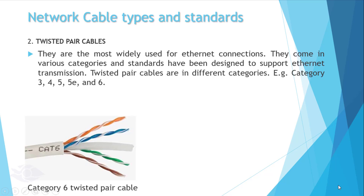Twisted pair cables — this cable is mostly seen lying around today because of its great transmission speeds, flexibility, and cheaper cost. They come in various categories, and standards have been designed for the cables to support ethernet transmission.